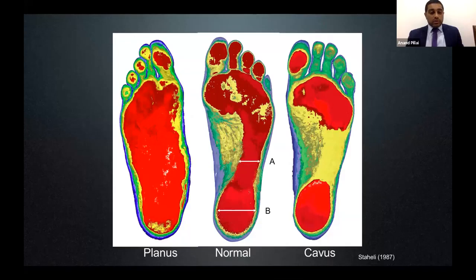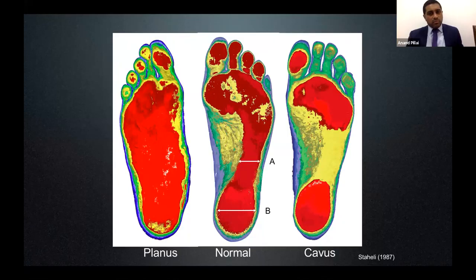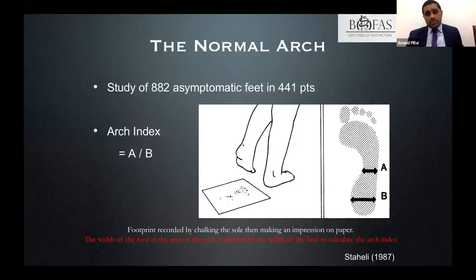Today's talk is on Pes Planus. In the clinical community, people use the terms Pes Planus, Pes Cavus, flattened arches, and high arches quite loosely. But are we able to quantify it? Staheli in 1987 described the arch index, which divides the width of the foot at the middle arch by the width of the heel. The result — A divided by B — gives you your arch index.